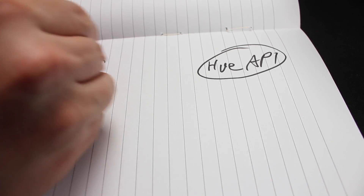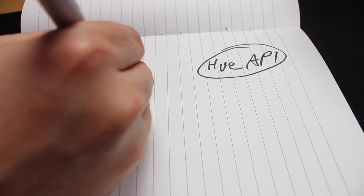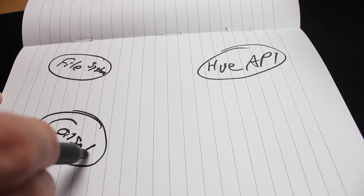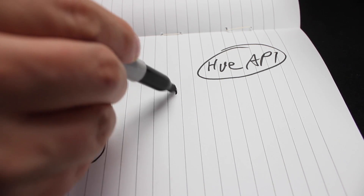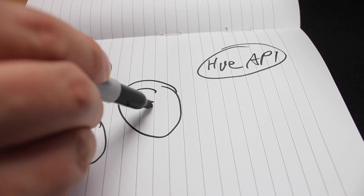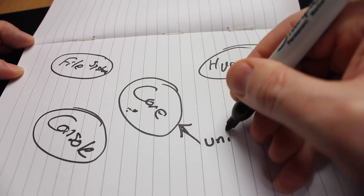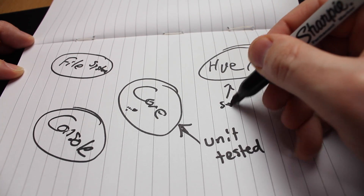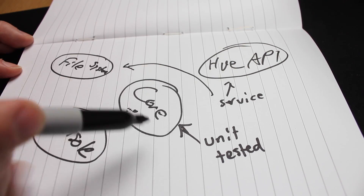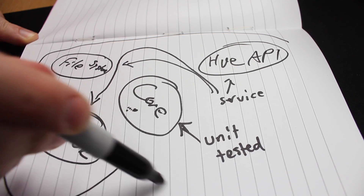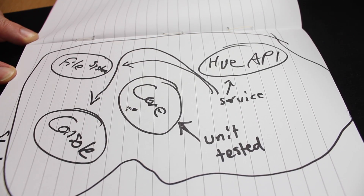That is the entirety of the software. This little app interacts with three things: first the Hue API, which it uses to create a Hue username that it saves on the file system. It also writes out what it does to the console. We're going to refer to the code that does all these things as 'core', and core is what we're testing — core is the unit in our unit test. The console, Hue API, and file system are not what we are writing tests for; we're assuming that they work. We'll collectively refer to the services around the core that we're not testing as the 'shell'.